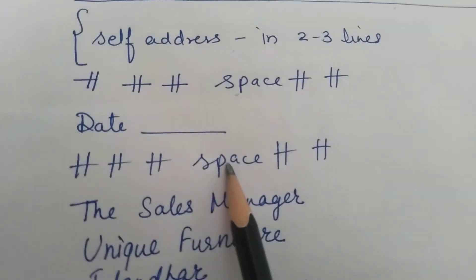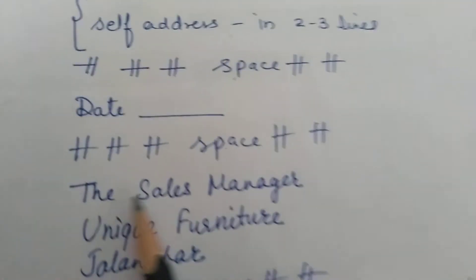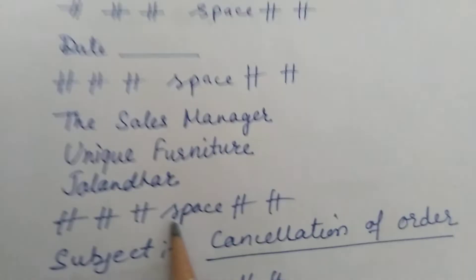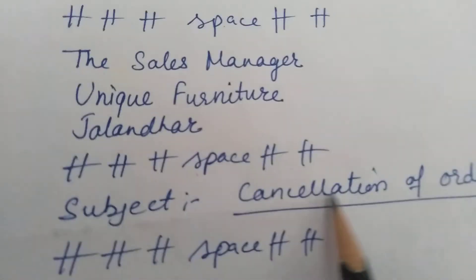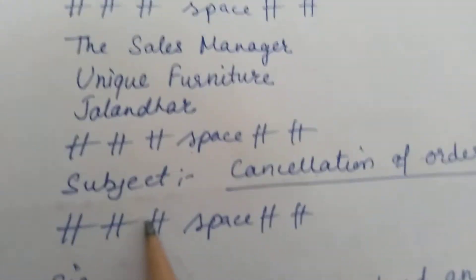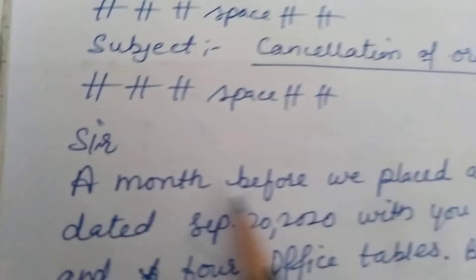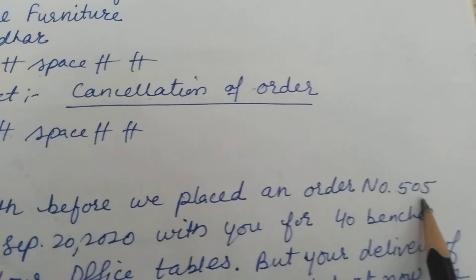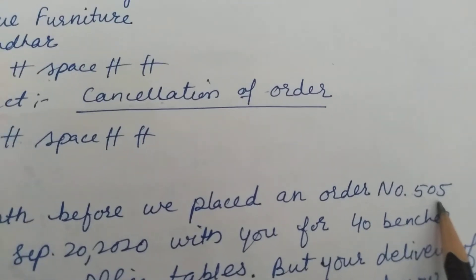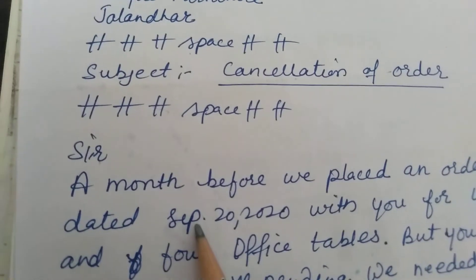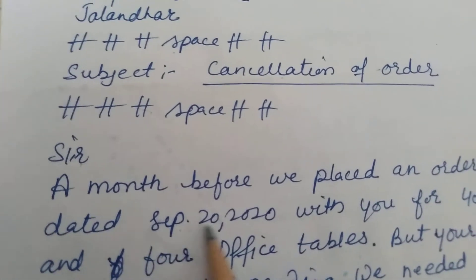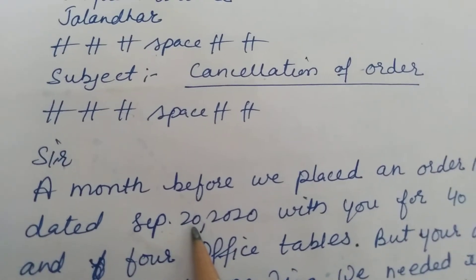Then the date, followed by space. Write the Sales Manager, Unique Furniture, Jalandhar. Space again, then the subject: Cancellation of Order. Space. Begin: Sir, a month before, we placed an order number — this is the most important thing — dated, and the date should also be mentioned here with the order.